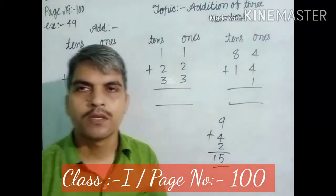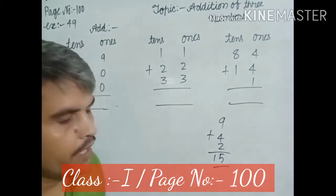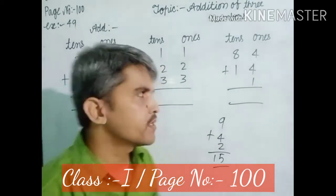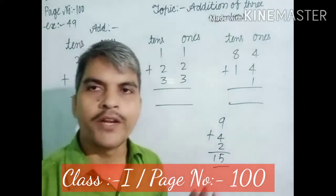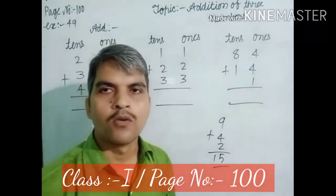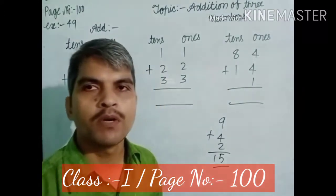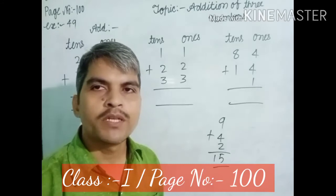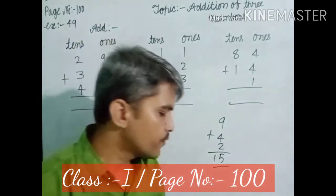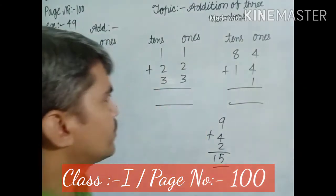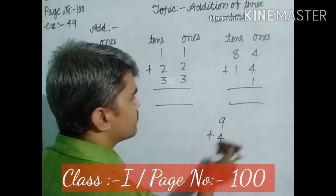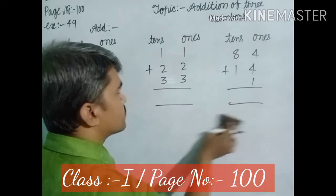But today's topic, dear students, is additions of three numbers — same topic, but we discuss 10s and 1s forms of additions. You know that a 1-digit number is a 1s digit number, and a 2-digit number has 1s and 10s. So today, let us start the related topic: 1s and 10s digit numbers — additions of three numbers.